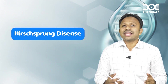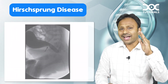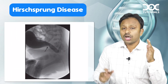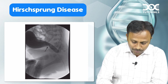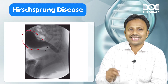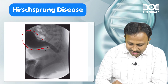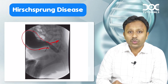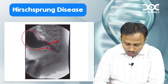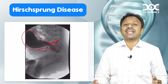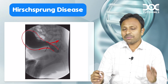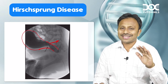You do a barium enema. The barium enema is the investigation of choice for Hirschsprung disease. What do you see? A proximal dilated segment which is innervated, an intermediate segment or transition zone which is hypoganglionated, and the lower distal segment which is aganglionated — a narrow zone.